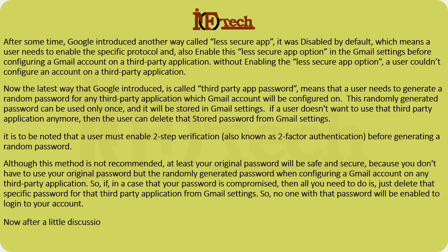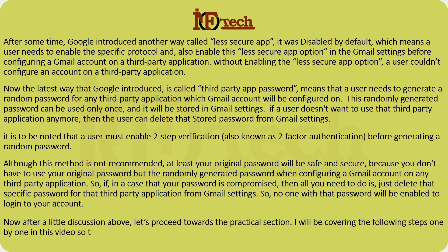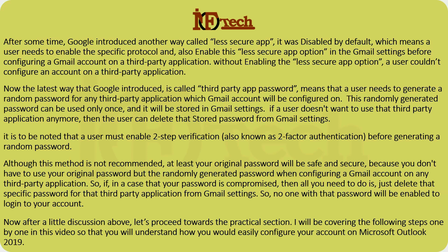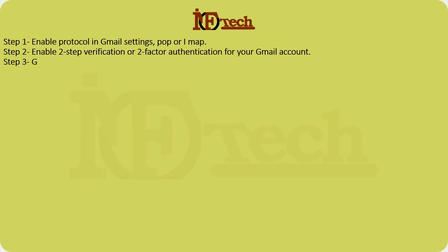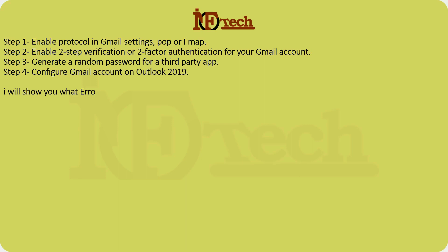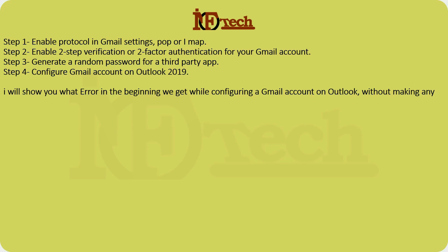Now let's proceed towards the practical section. I will be covering the following steps one by one: Step 1 — Enable protocol (POP or IMAP) in Gmail settings. Step 2 — Enable two-step verification or two-factor authentication. Step 3 — Generate a random password for a third-party app. Step 4 — Configure Gmail account on Outlook 2019. I will first show you what error we get while configuring a Gmail account on Outlook without making any changes in the Gmail settings.